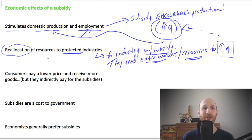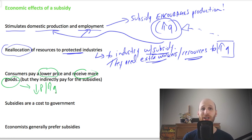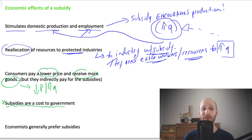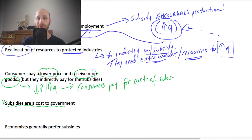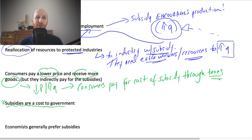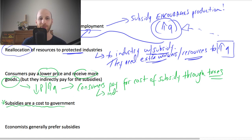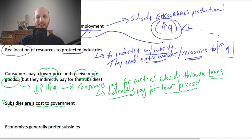The next effect is a little more complicated: consumers pay a lower price and receive more goods. We know that with a subsidy we get a lower price and higher quantity — but consumers don't get this for free. Subsidies are actually a cost to the government. Consumers pay for the cost of subsidies through their taxes, which go to the government and fund the subsidies. So consumers indirectly pay through their taxes for the privilege of lower prices.